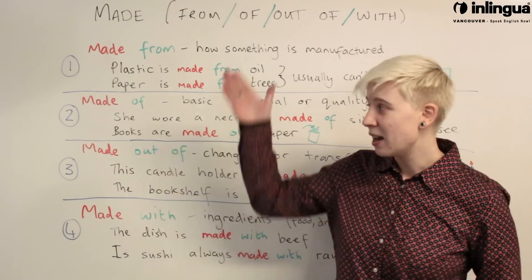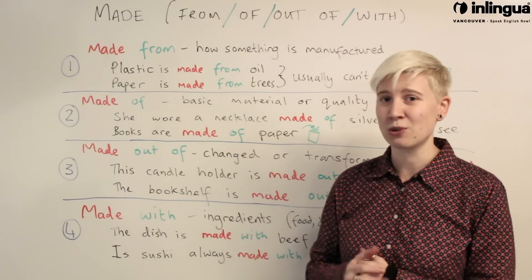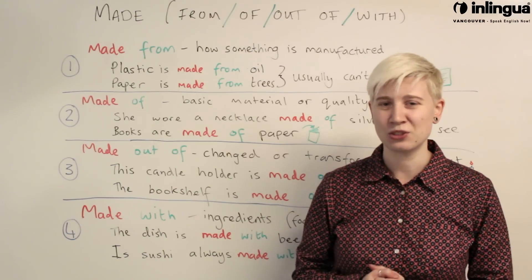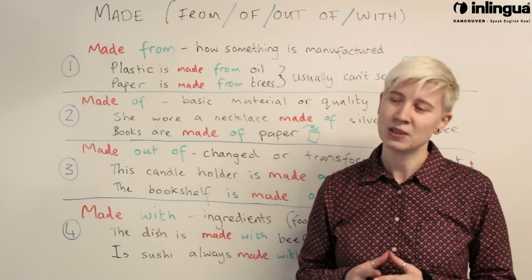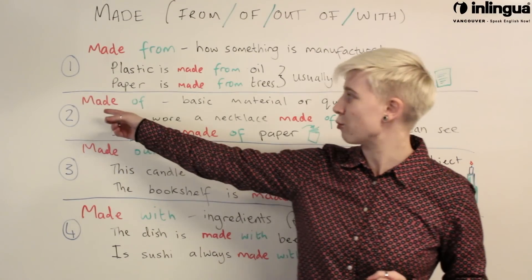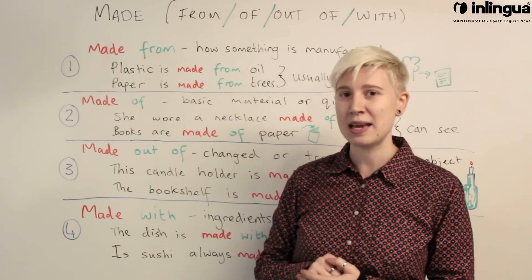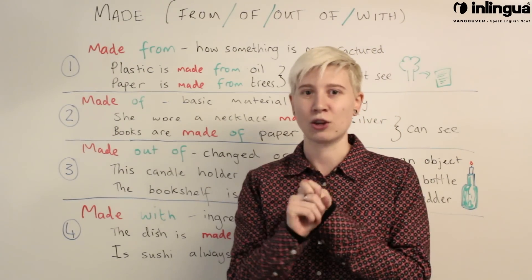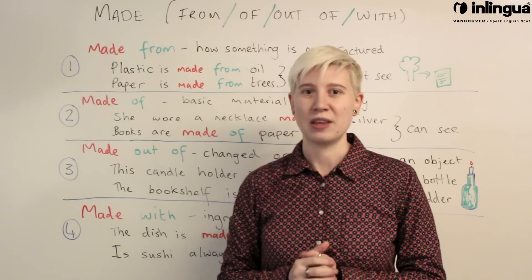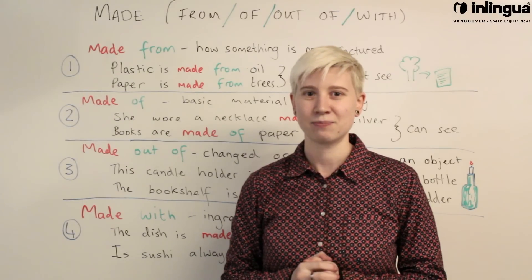I have my examples all set up. You'll see the colour is the same for each one. I'm using red for 'made' and green for the preposition that goes with each sentence.